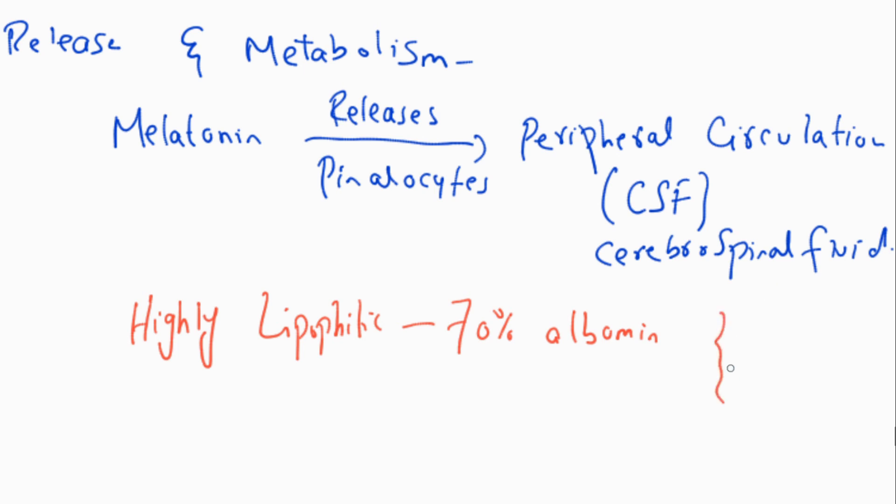The half-life of melatonin is 30 minutes. The half-life varies when we take it orally and can be 3 to 45 minutes. Melatonin is metabolized in liver and kidney.